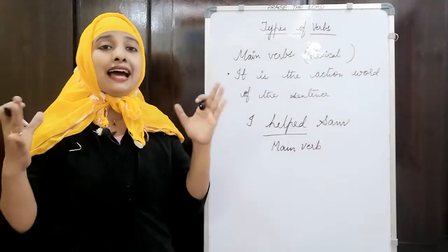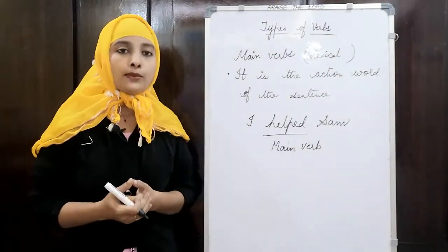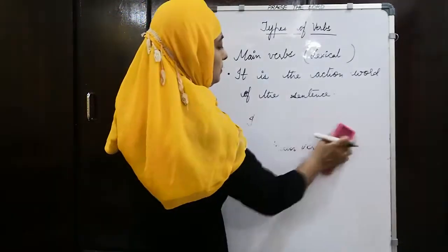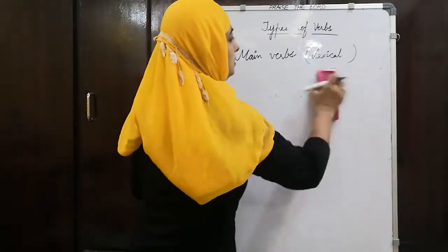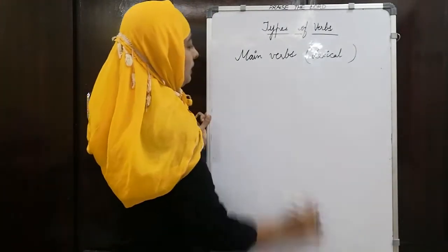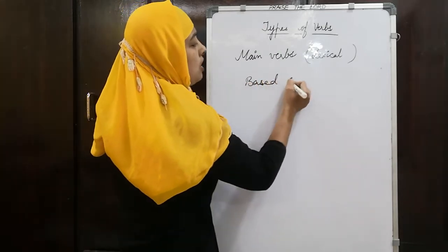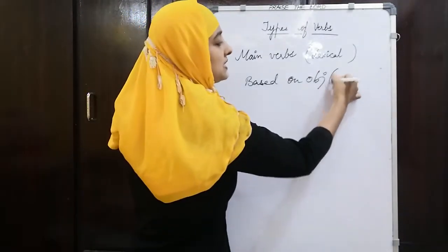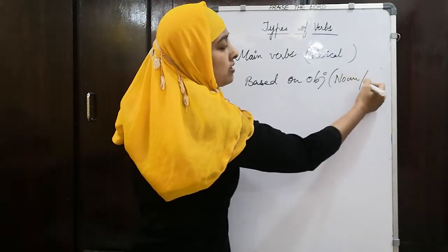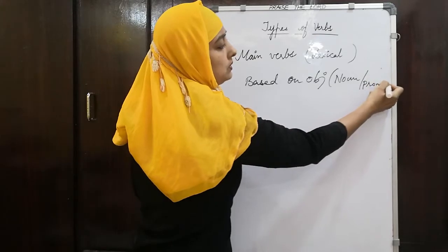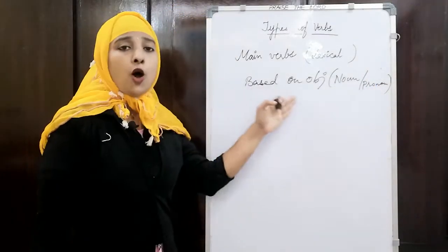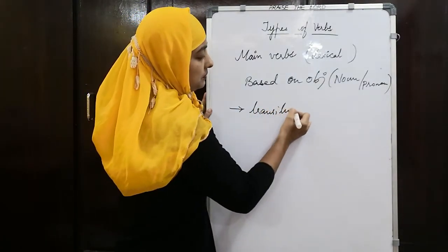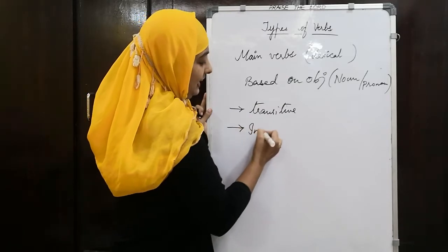Main verbs are the actions which are being performed. They are classified based on the object. The first category is based on object. Object in a sentence is nothing but either a noun or a pronoun. Based on object, they are classified as transitive and intransitive.